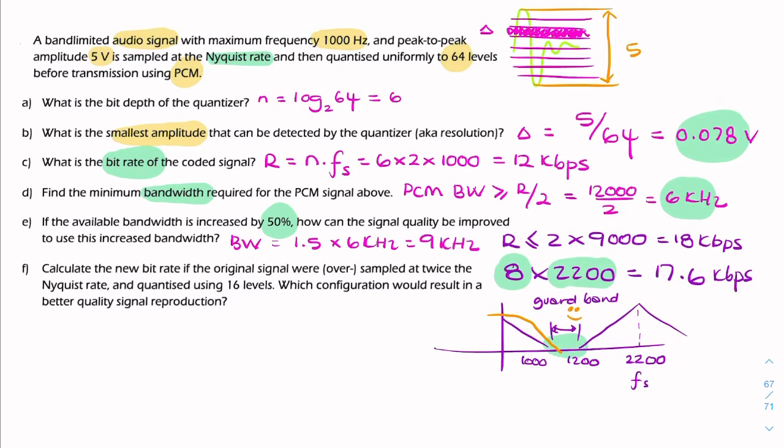Now, in the final section, we're told that we are now oversampling at twice the Nyquist rate. So this time, remember, r is simply the bit depth times the sample rate. Now, if the sample rate is now twice the Nyquist rate, that's 2 times 2,000.